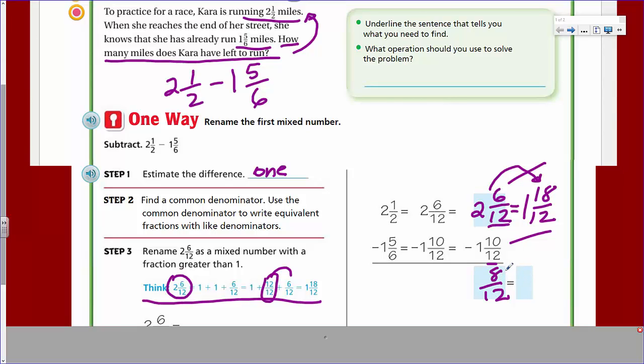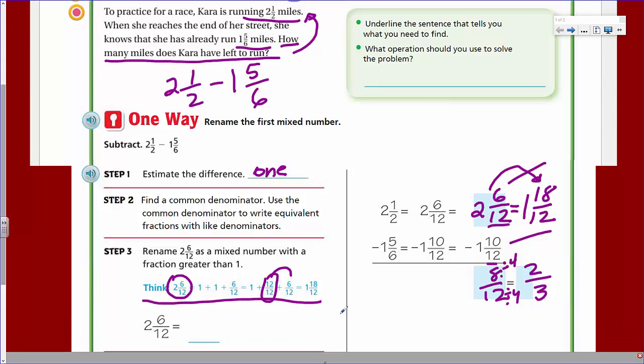Oh, in the simplest form, we could divide a 4 out of here and get 2. And we could divide a 4 out of 12 and get 3. And this is how we take a fraction and put it in simplest form. This is what they were looking for.